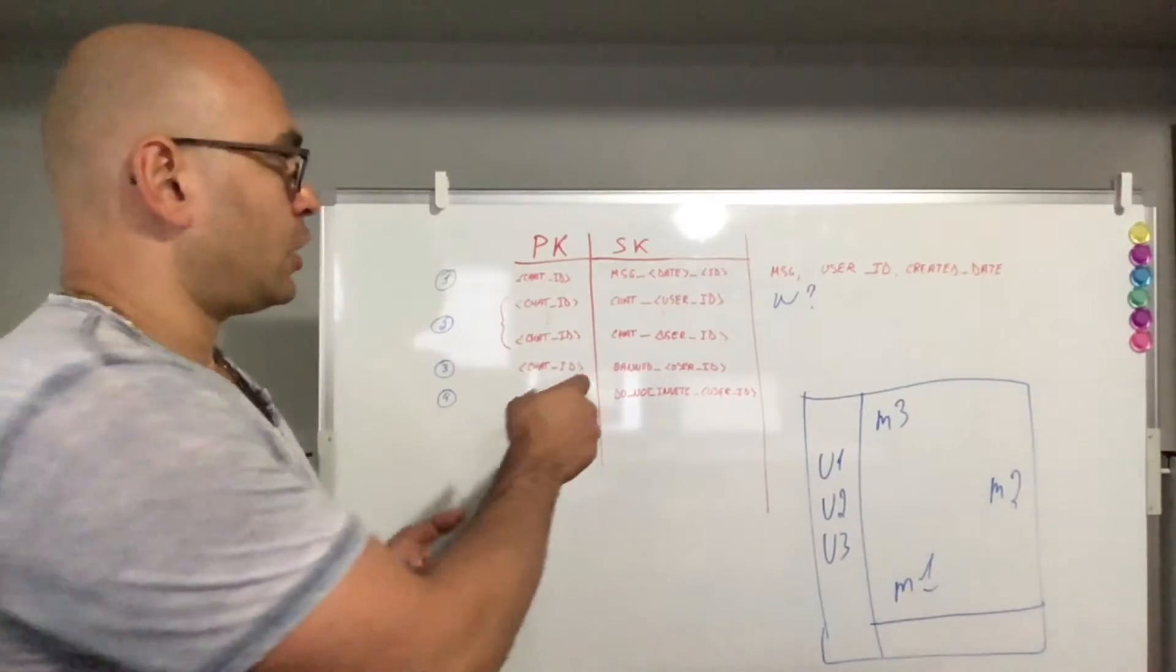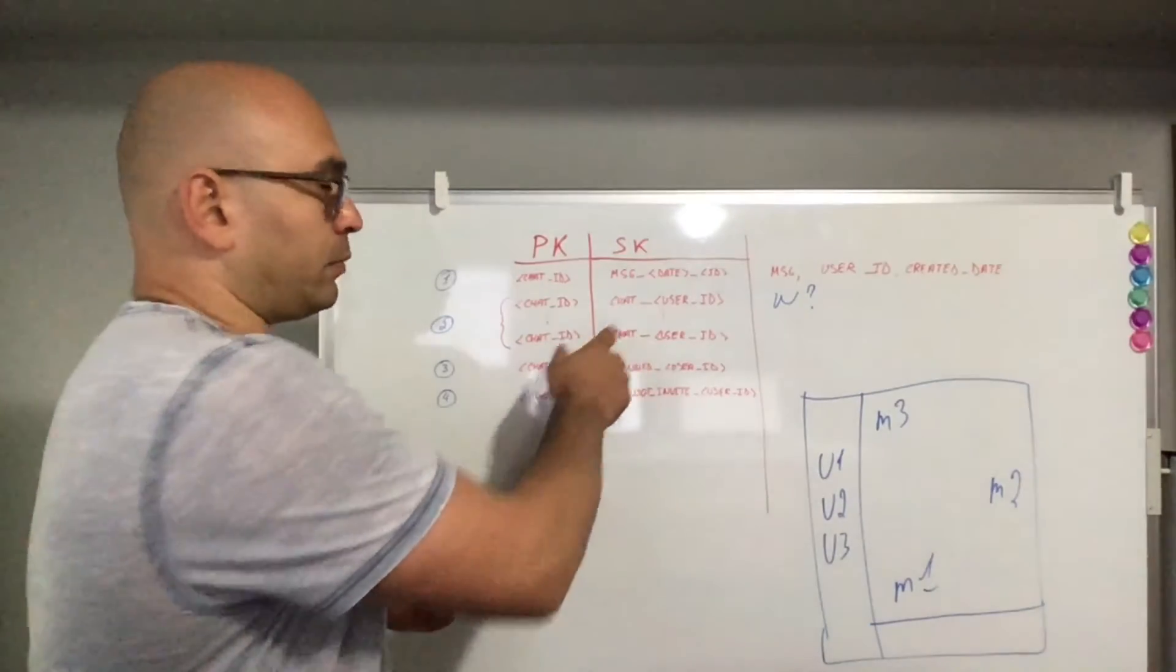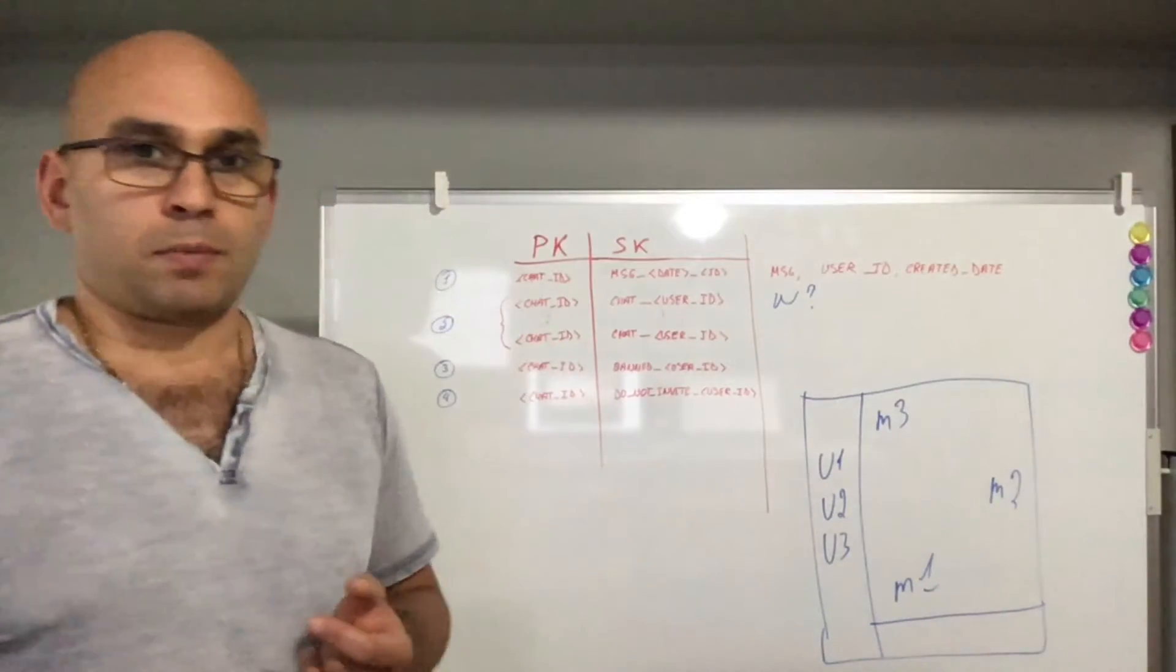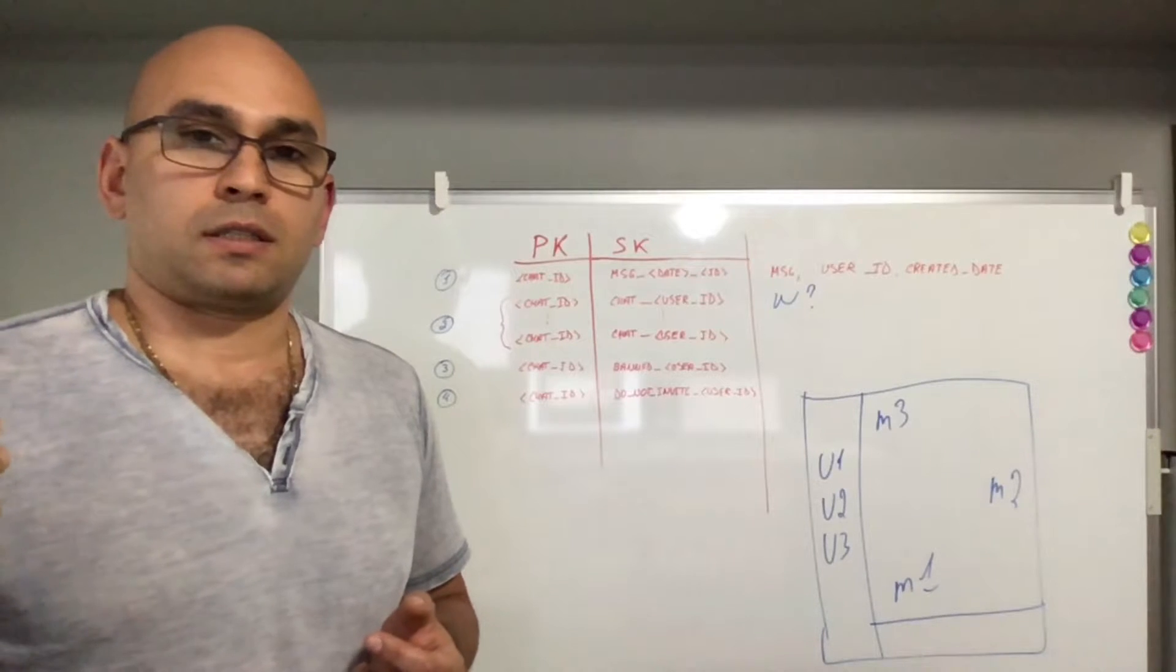So I would have the sort key be the partition key for this index and the primary key be the sort key.